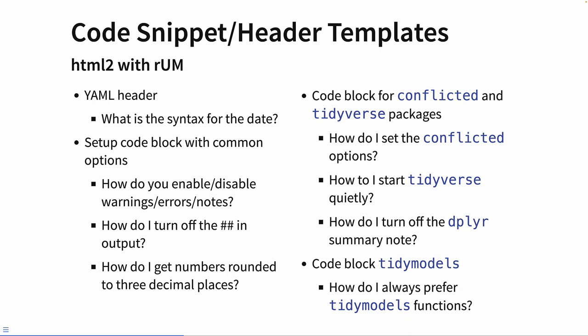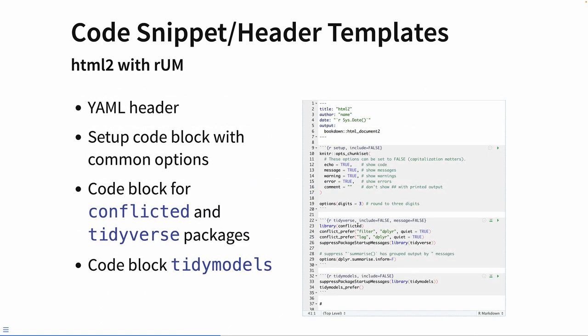If you're not familiar with Conflicted, it watches to see if you're using packages that contain the same function. So if a function, say, lag appears in more than one package that you have loaded, it will stop you from using lag until you say which version you want to use. With Conflicted, you can set options for your default preferences. I also teach modeling with TidyModels. By using the code snippet, all of those options are set for you, and we've tried to document these things so that the instructions are easy to set and modify for novices.